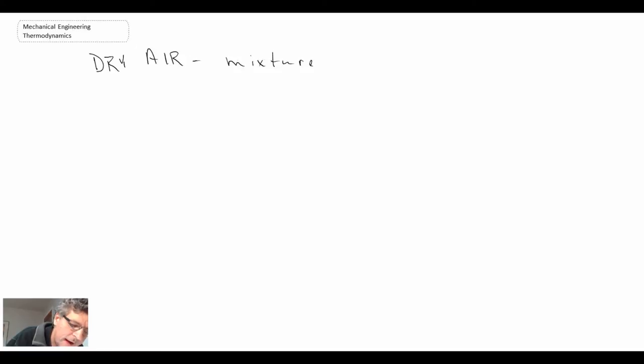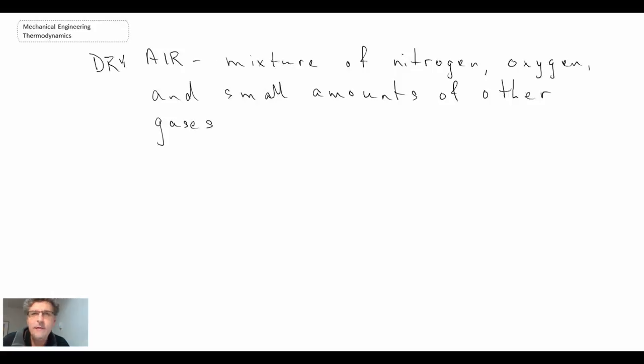This is typically air as we usually think of it. Typically we think of air as being mainly nitrogen and oxygen and then small amounts of other gases. However, when we talk about dry air, we are implying that there is no water in the air.